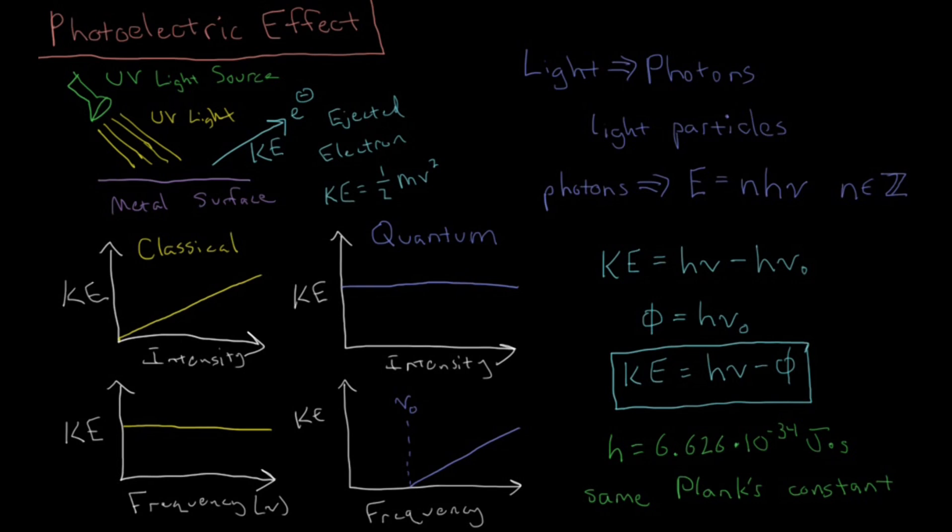So after this, physicists started thinking, well, these are two completely unrelated phenomena, black body radiation and the photoelectric effect. And this constant comes up with the same value both times. So maybe there is something to this Planck's constant after all.